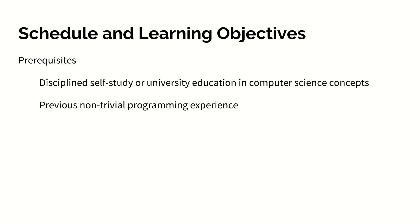The book is more geared towards people with potentially no programming experience. This course is intended for people with experience in computer science or a related field. It's going to be moving a little more quickly through certain concepts than the book does. As such, I would expect people taking this course to have disciplined self-study or university education in computer science concepts like data structures and algorithms, as well as previous non-trivial programming experience.